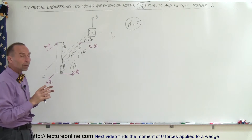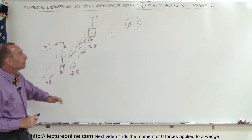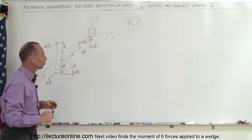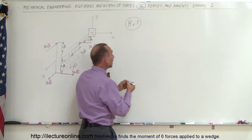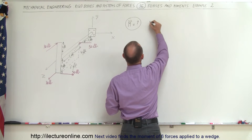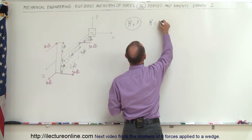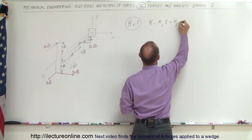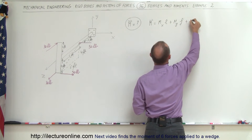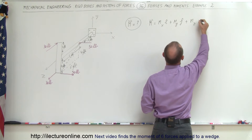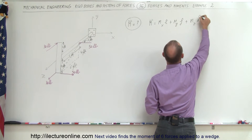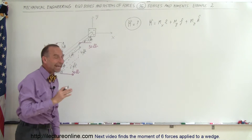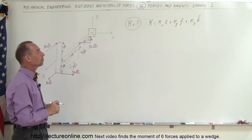Those two couples will form two moments, and what we're trying to do is find the total moment caused by all four of the forces. We also realize that the moment is basically a vector, so we can write that the moment is equal to the moment in the x direction plus the moment in the y direction plus the moment in the z direction. The easiest way to do this is to find the x, y, and z components of the moment and simply add them together.